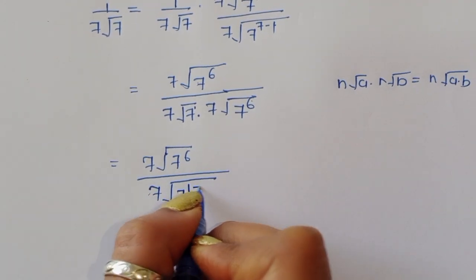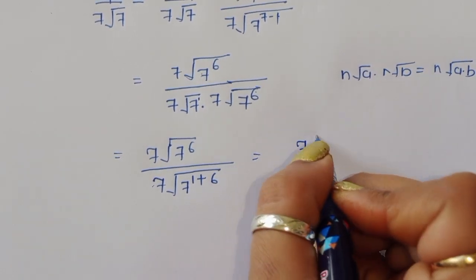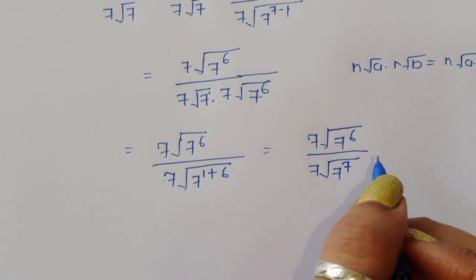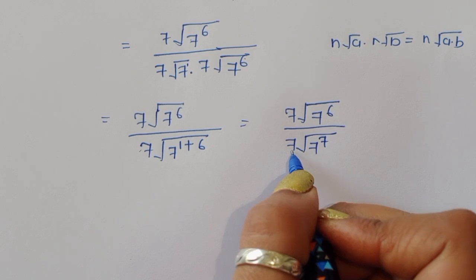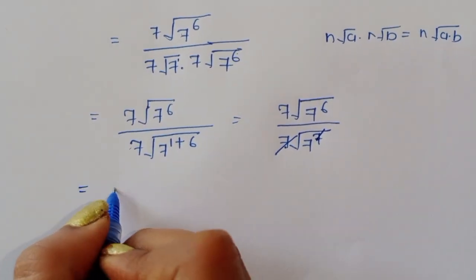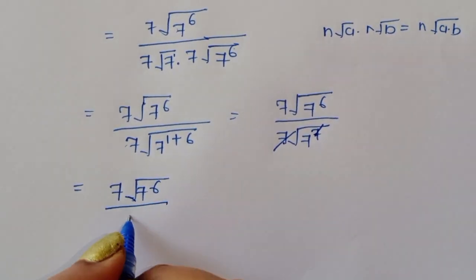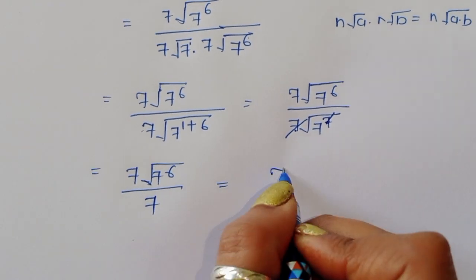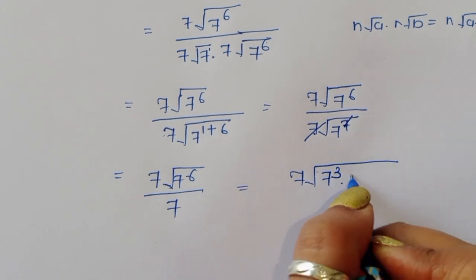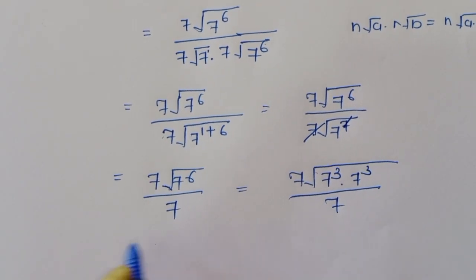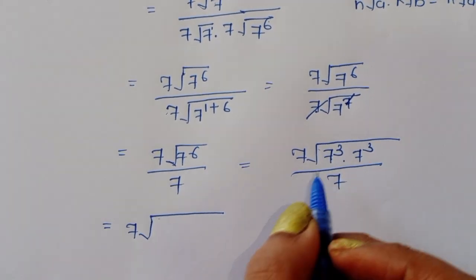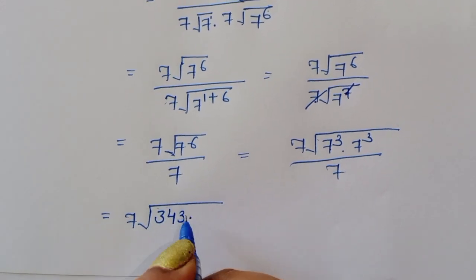So we have the 7th root of 7^6 divided by the 7th root of 7^7. Since the 7th root of 7^7 equals 7, the denominator simplifies to 7. Now 7^6 equals 7^3 times 7^3, and 7^3 is 343, so 7^6 equals 343 times 343.